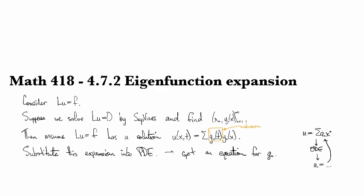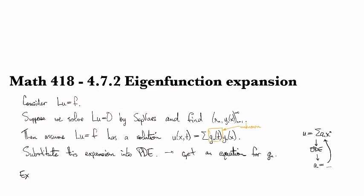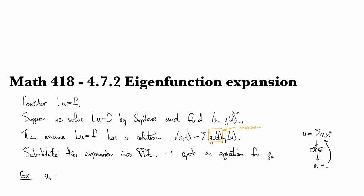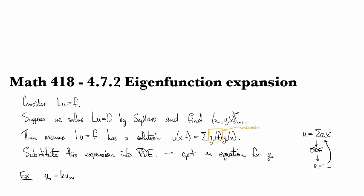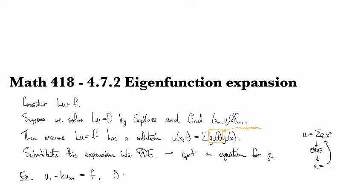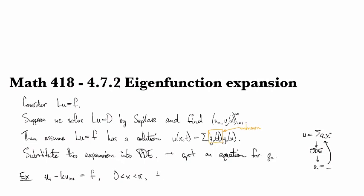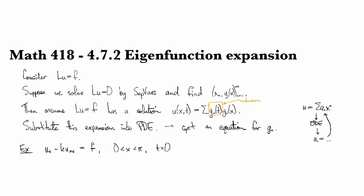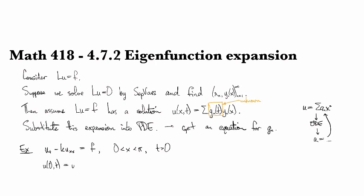Let's look at a particular example. Suppose we've got u_t minus k u_xx equals F. We'll work on the interval from 0 to pi with t positive. And we'll take u at 0 and u at pi to be 0. So we have homogeneous Dirichlet conditions. And we'll take a 0 initial condition, too, just to keep it simple.